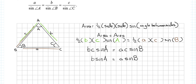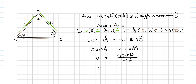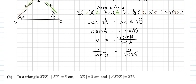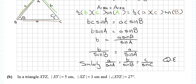Rearranging: b = a·sin B / sin A. Dividing by sin B gives b / sin B = a / sin A. Similarly, a / sin A = b / sin B = c / sin C. QED — done.